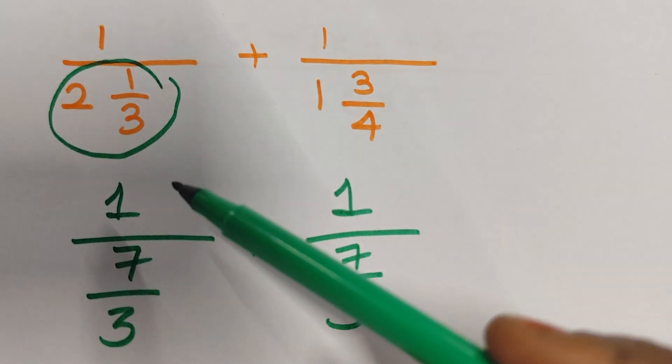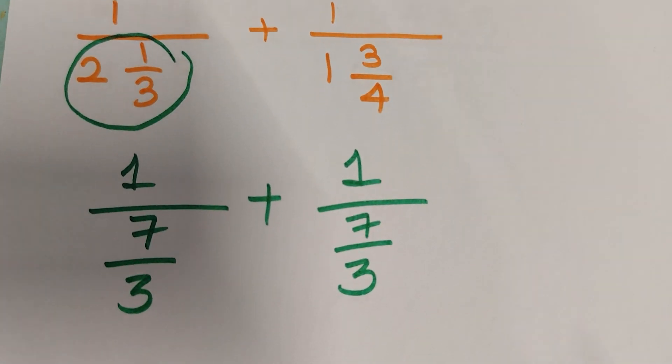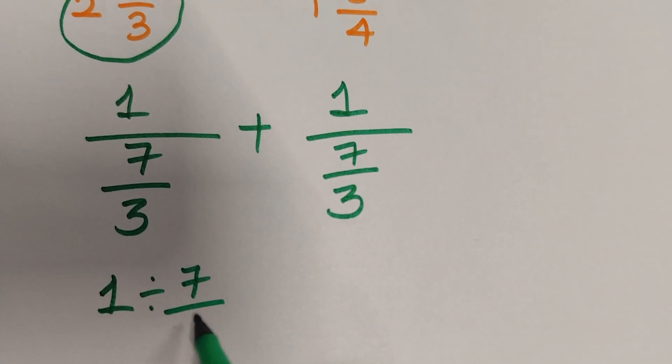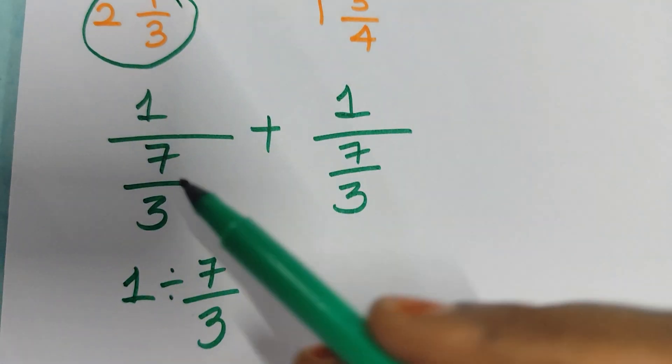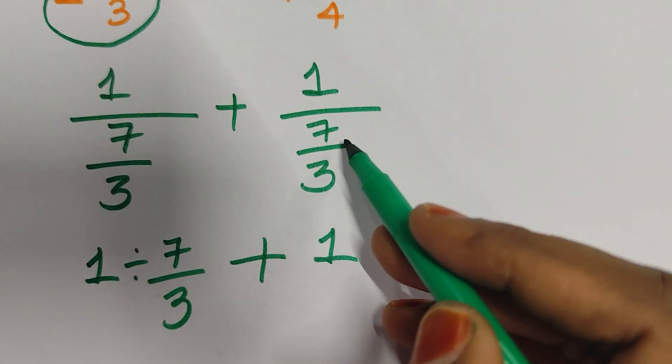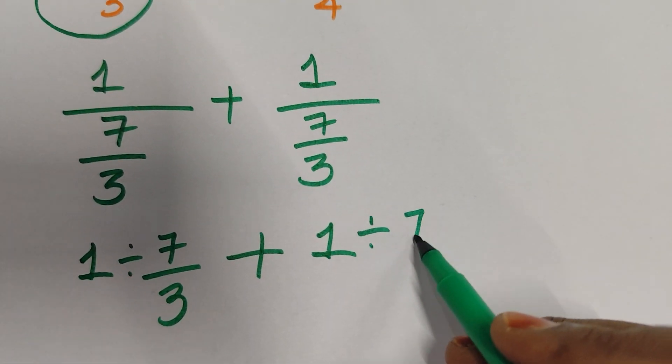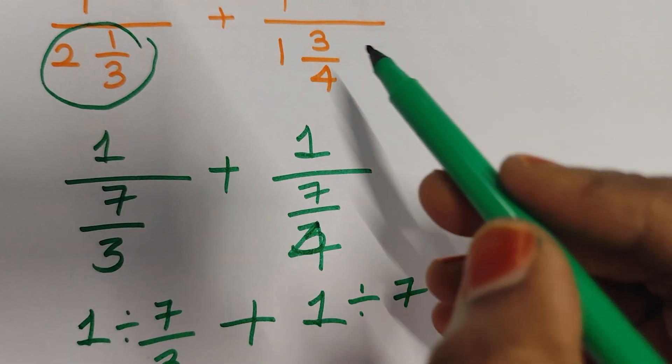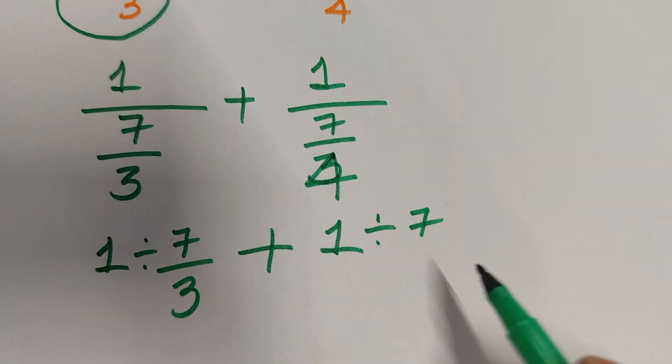Here actually 1 divided by 7/3, so I am writing this as 1 divided by 7/3 plus 1 divided by 7/4. 1 times 4 is 4, 4 plus 3 is 7/4.